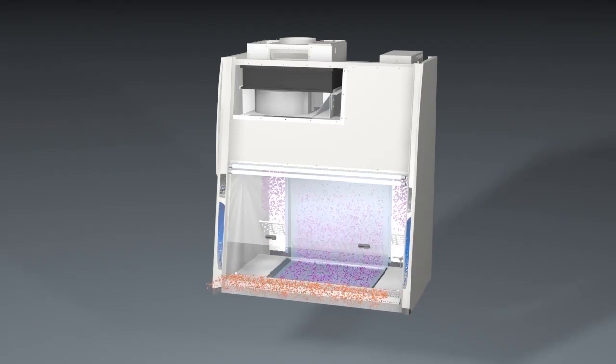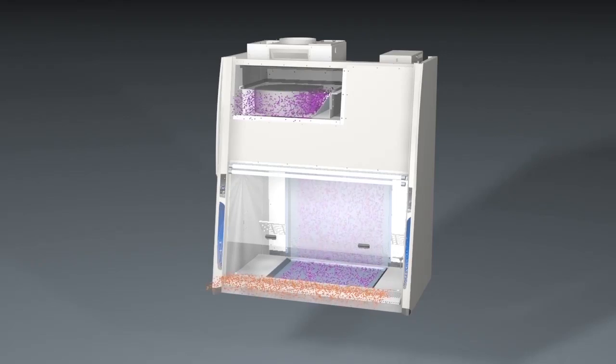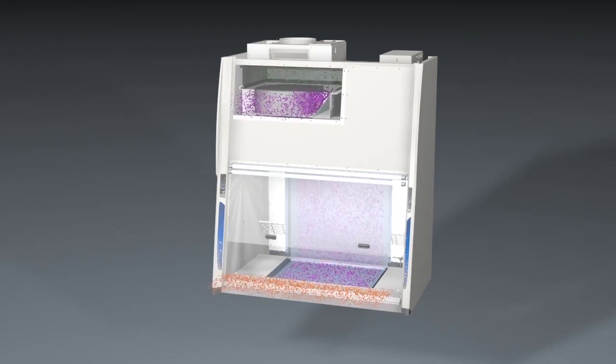Exhaust air directed through the chemzone is kept separate from the supply air by a dedicated internal duct system that feeds directly into the exhaust air plenum.